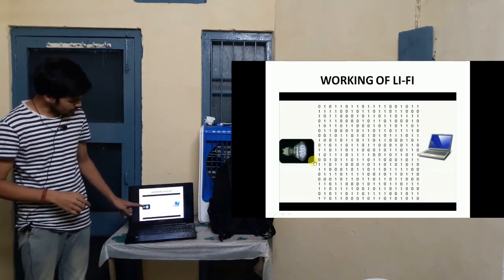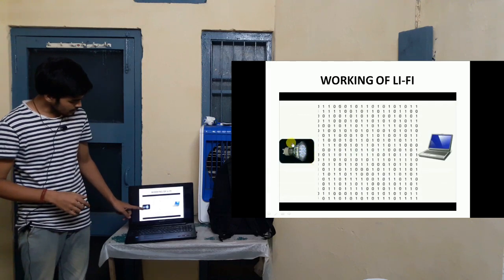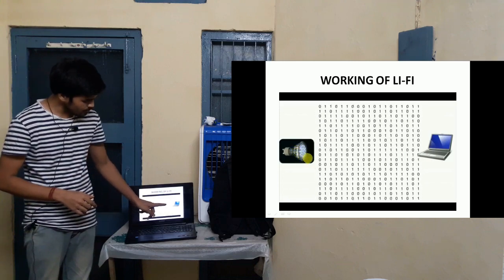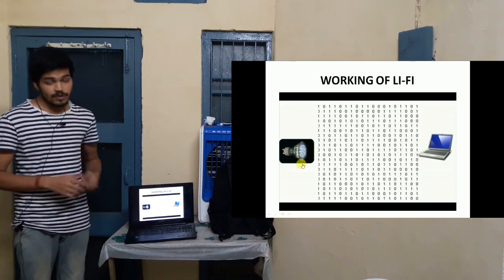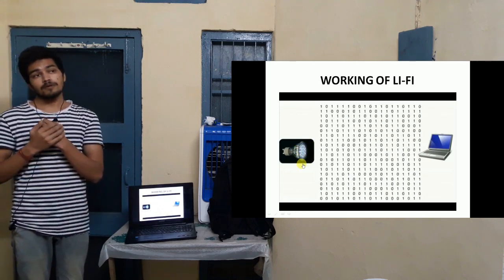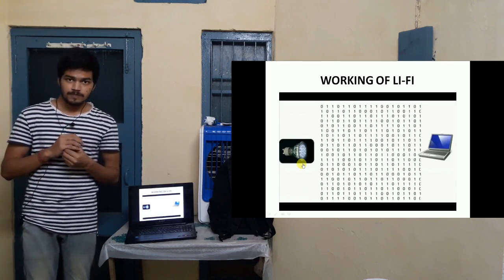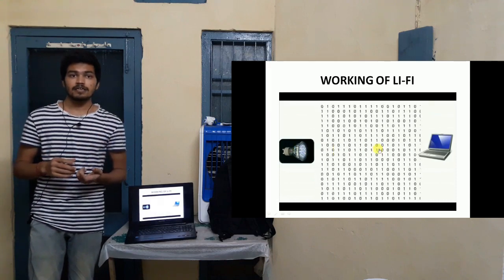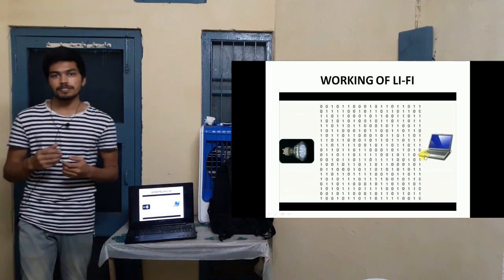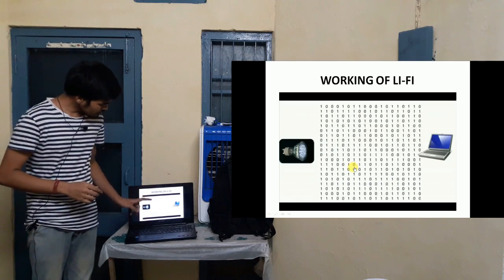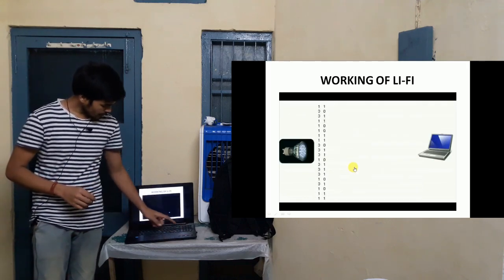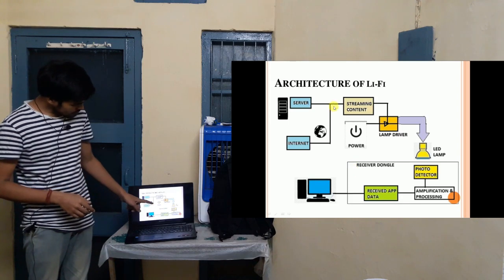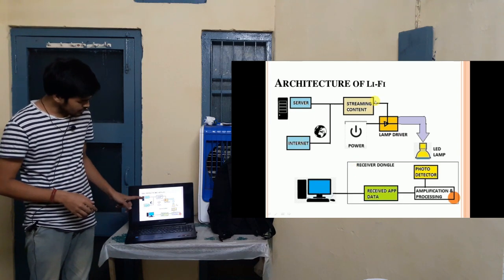As you can see, we have the LED light here, and these are the thousands of streams of data. LED is made up of semiconductor material. The quality of a semiconductor is that it can be modulated at a very high speed. This is the working principle of Li-Fi.